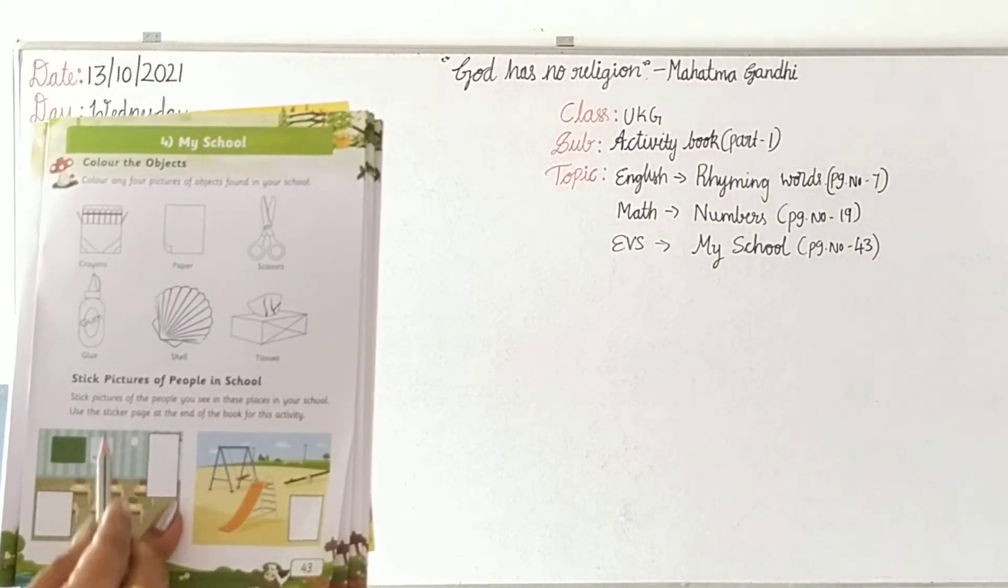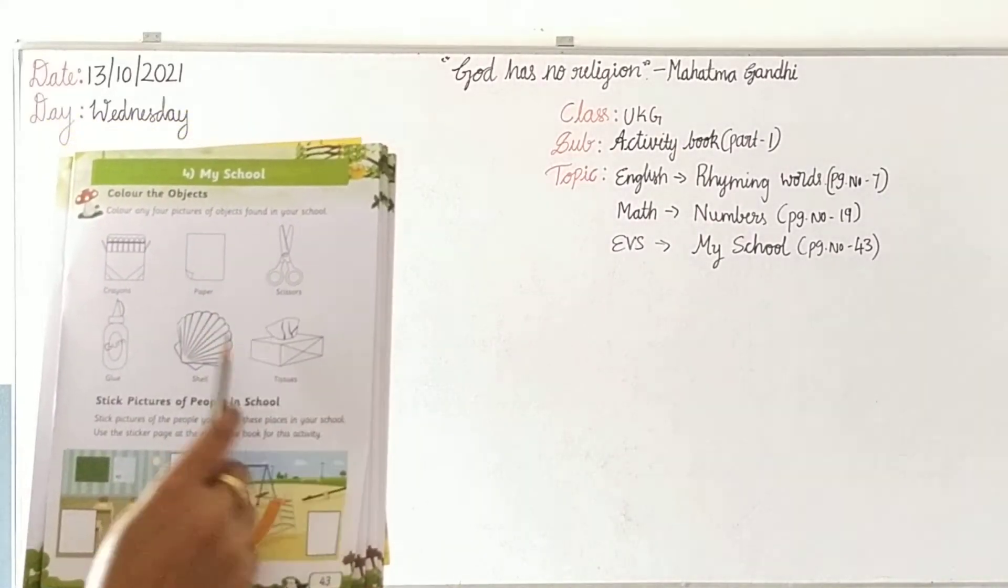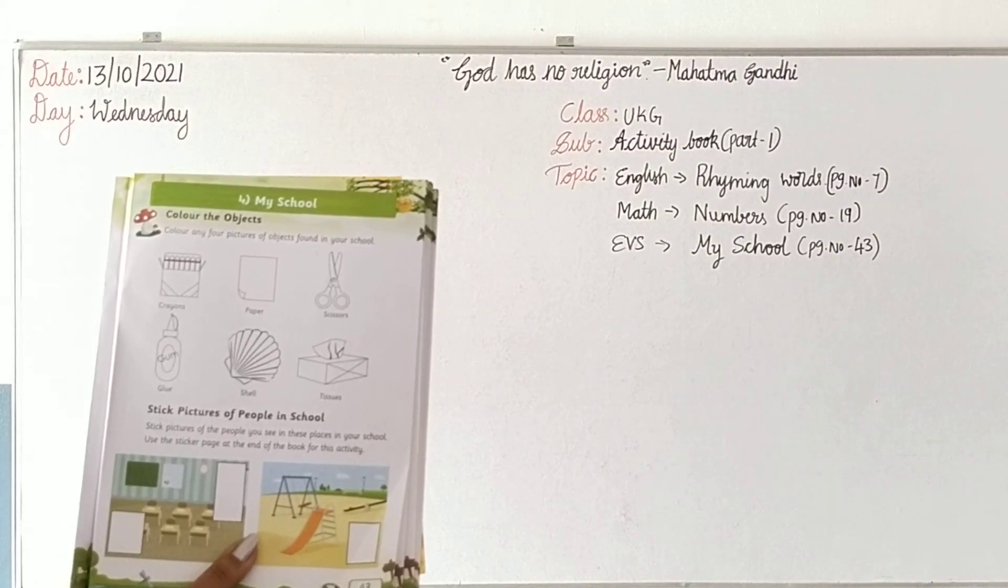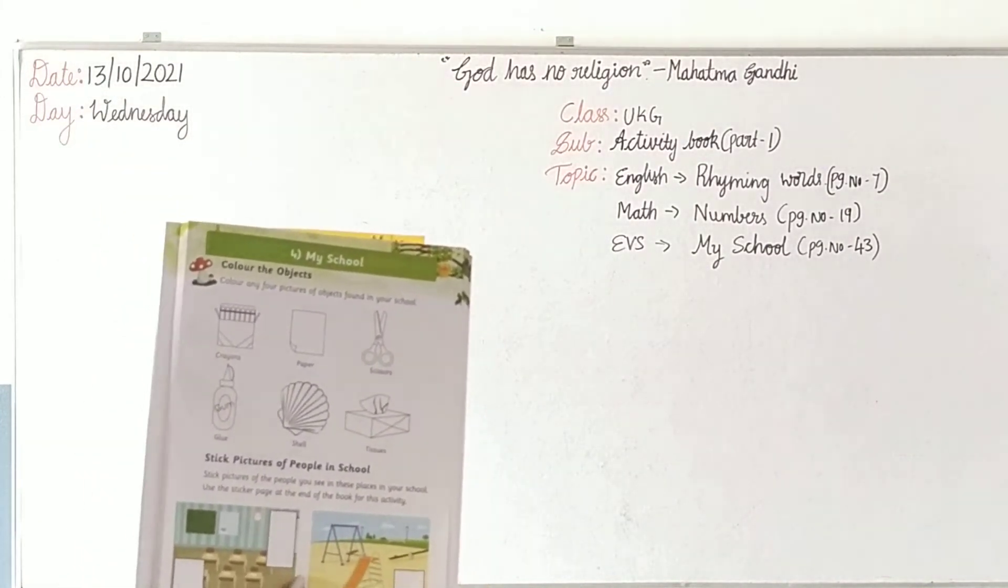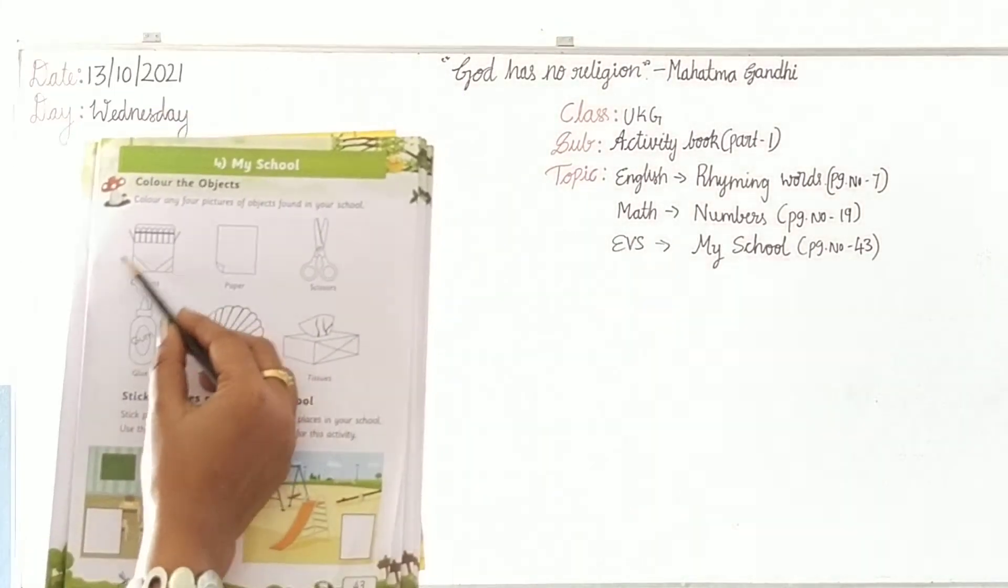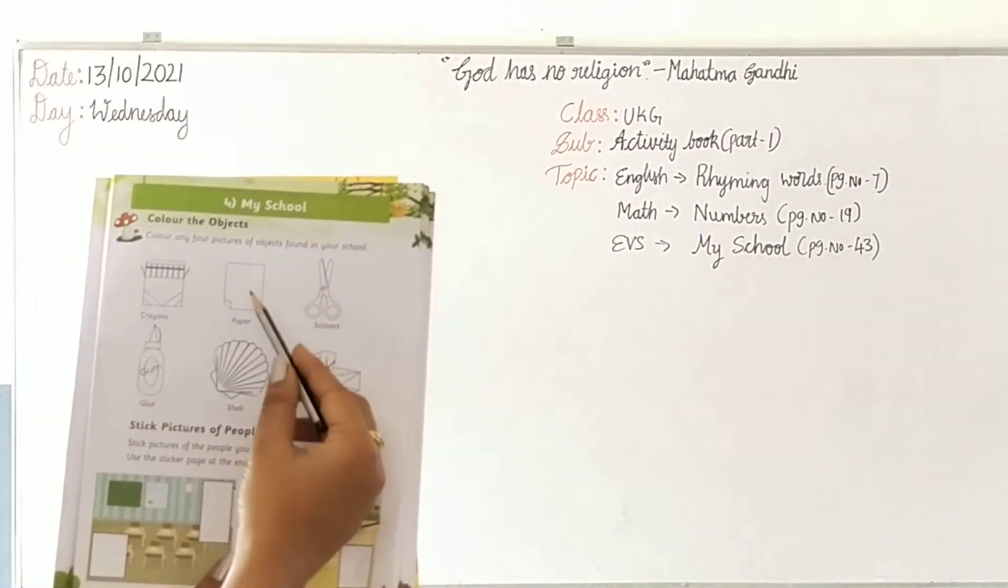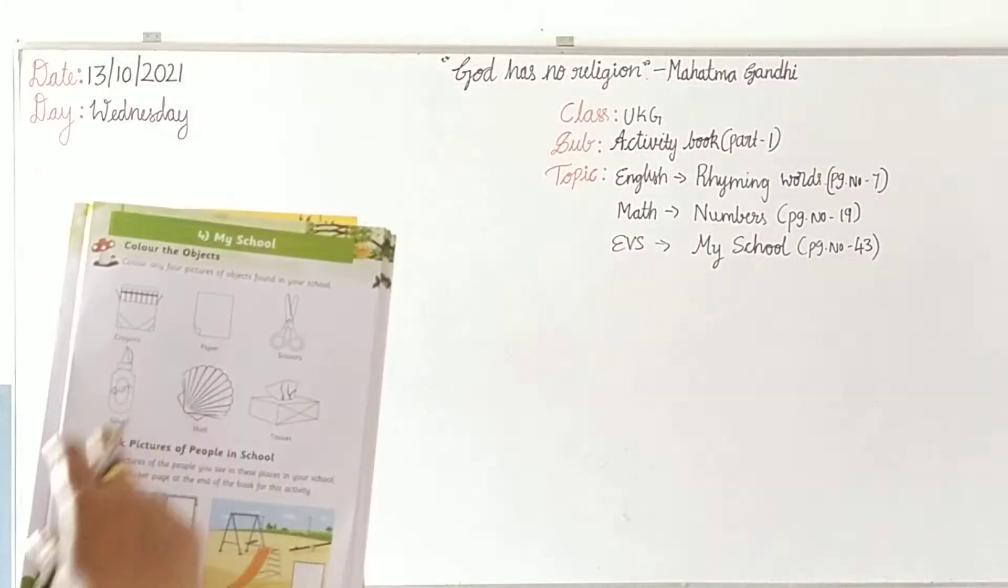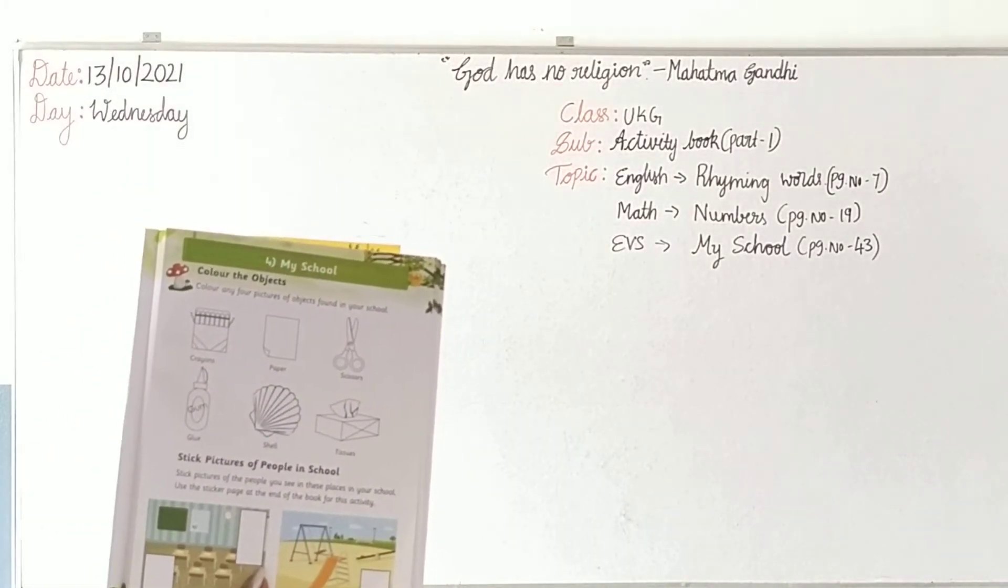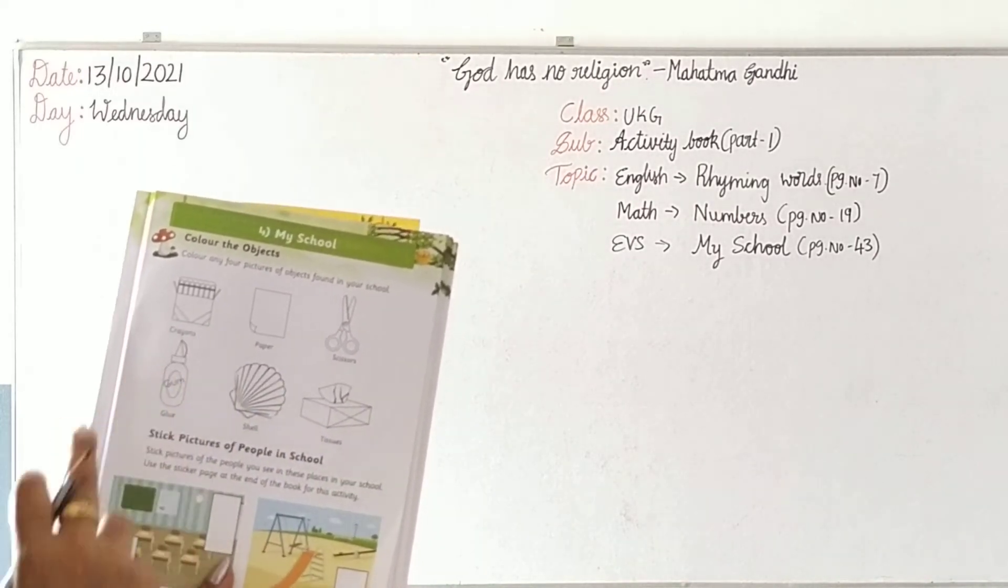See 1, 2, 3, 4, 5, 6, there are six pictures. Have you seen the crayons at your school? Yes, it is there in our school. So you have to colour the crayon also. Papers we can see in our school, you can colour. Scissors also we can see at our school, you can colour. Glue also we will get.